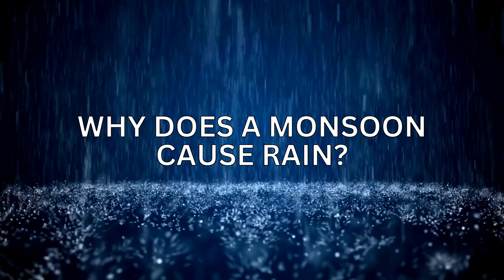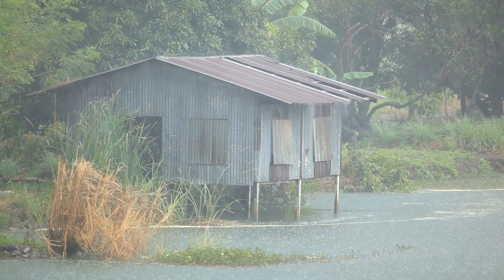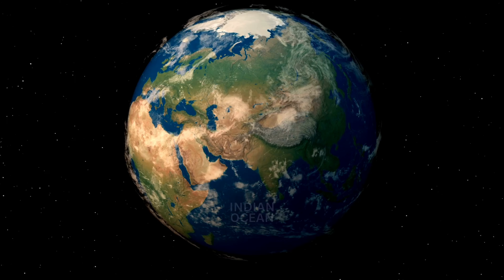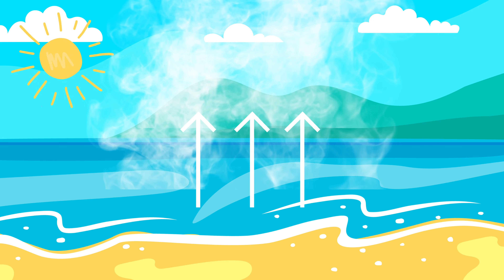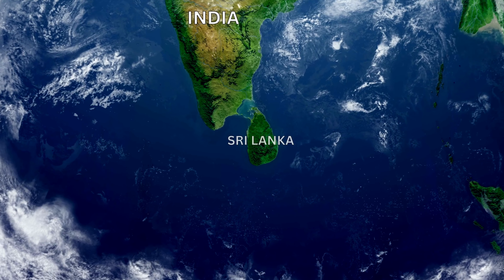Why does a monsoon cause rain? The monsoons that cause the heaviest rainfall are summer monsoons near the Indian Ocean. Warm water in the ocean evaporates, rising into the air. This causes the wind to change direction and moisture blows toward the land in countries such as India and Sri Lanka.